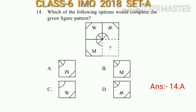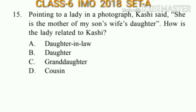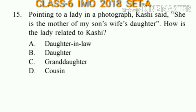Question number 15: Pointing to a lady in a photograph, Cassie said, 'She is the mother of my son's wife's daughter.' How is the lady related to Cassie? Cassie's son's wife's daughter's mother means she is the daughter-in-law. So the answer will be option A.